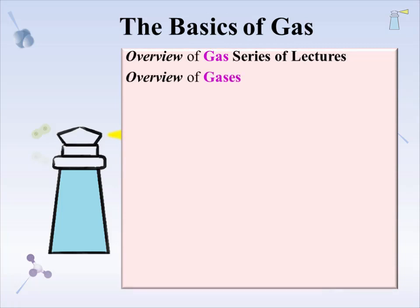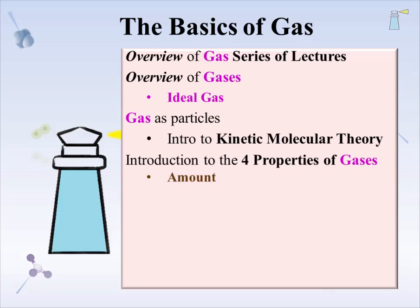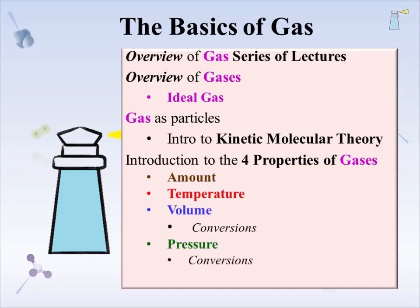This particular lecture begins with a general overview of gases, with an introduction to the concept of an ideal gas, and then a discussion of gas as particles, with an introduction to the kinetic molecular theory. The four basic properties of gases are presented and then explained in more detail. The properties are amount, temperature, volume along with some conversions between volume unit types, and pressure along with some conversions between pressure unit types. Finally, we'll talk about standard temperature and pressure.